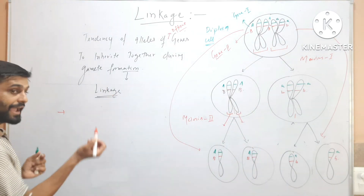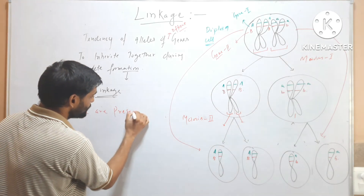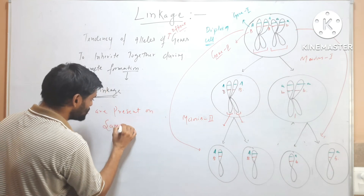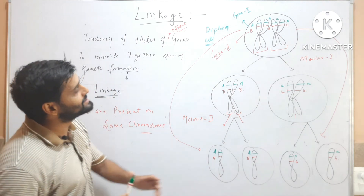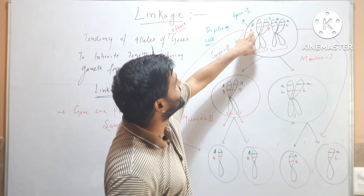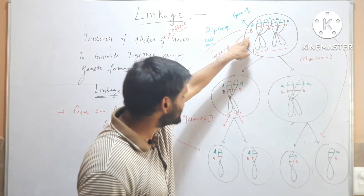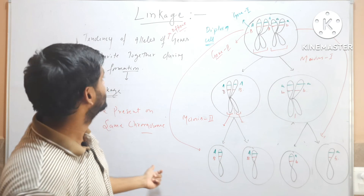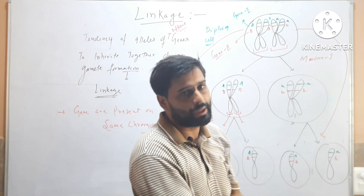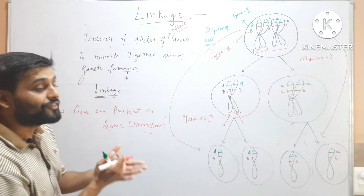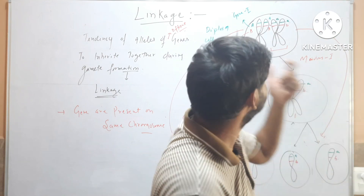Linkage is seen when genes are present on the same chromosome. In this example, both genes are present on the same chromosome, which is why their alleles are inherited together. So linkage is the tendency of alleles of different genes to inherit together during gamete formation, and this phenomenon occurs when genes are present on the same chromosomes.